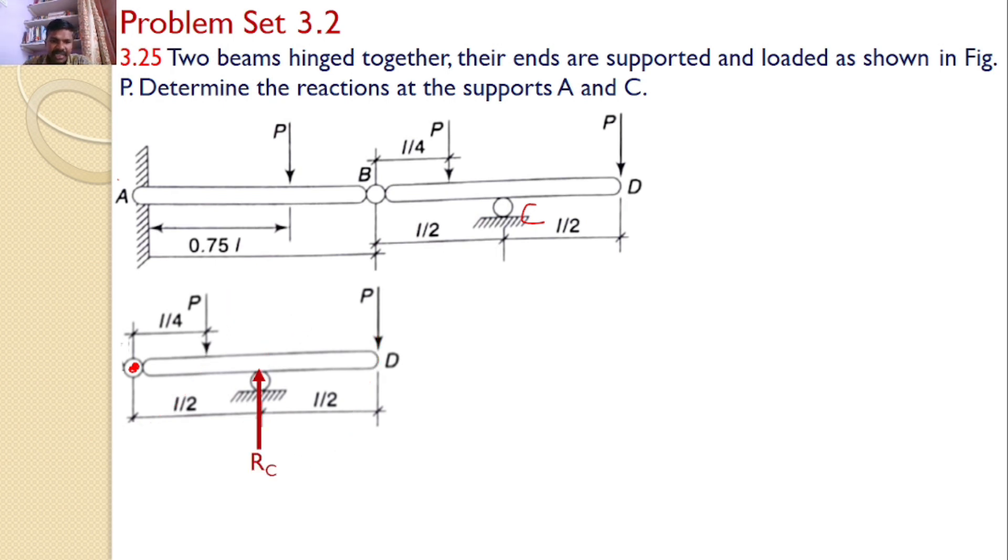Hence, there is a reaction Rc. I will take the moments about B. So, I can say P into L by 4, this P into L, and this Rc into L by 2. I can simplify this equation, and I can find the value Rc is equal to 5P by 2, or Rc is equal to 2.5 into P.